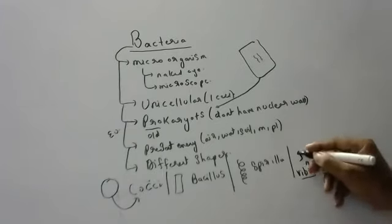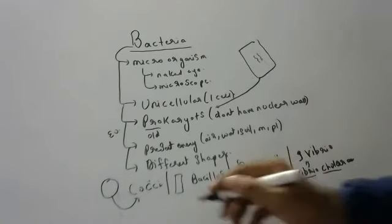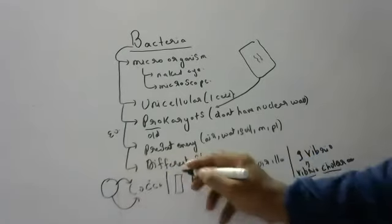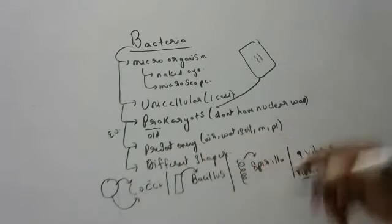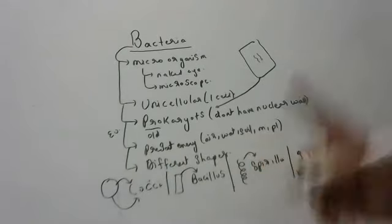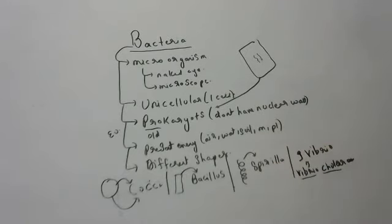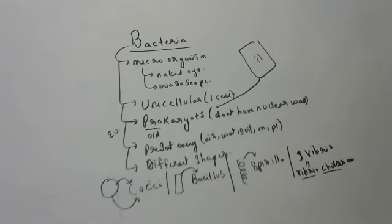To summarize the shapes: if they are round, it is Cocci; if they are rod-shaped, it is Bacillus; if they are spiral like a spring, it is Spirillum; and comma-shaped is Vibrio. So there are many different types of bacteria.